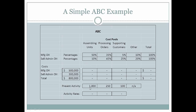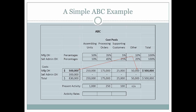Next, we're going to look at the present activity rates. On a yearly basis, they are on average assembling 1,000 units, processing 250 orders, and they have approximately 100 customers. We're going to take the manufacturing overhead total and multiply it by the percentage used in assembling units — the result of that is 250,000. For processing orders, that's 35% of the 500,000. We want to make certain that the 500,000 agrees to the 500,000 once we've added up all four cost pools.